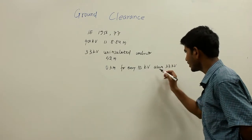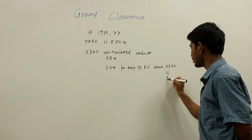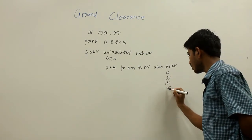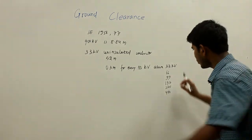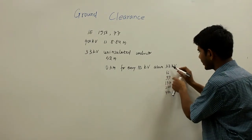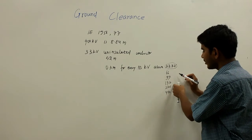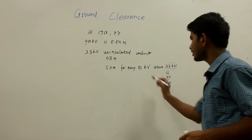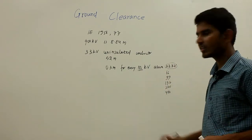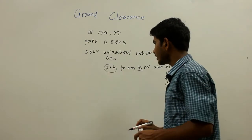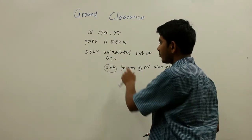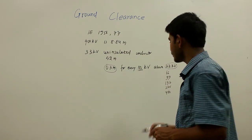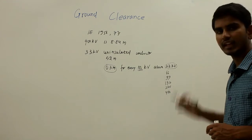That means, for any given voltage level — whether 66, 99, 132, 220, or 400 kV — I will subtract 33 kV from that voltage, then divide the result by 33, so that I can multiply the result with 0.3 to know the clearance to be added to the base 5.2 meters. Ultimately, I can find the minimum ground clearance for that particular kV transmission line.